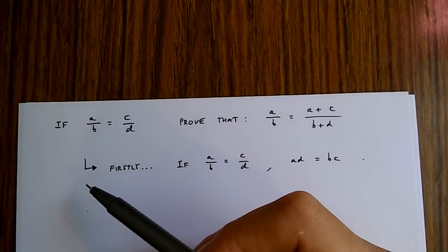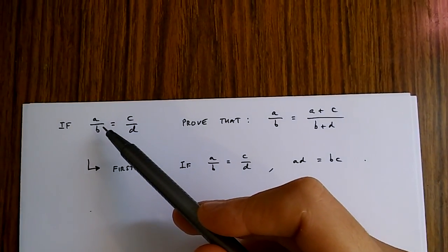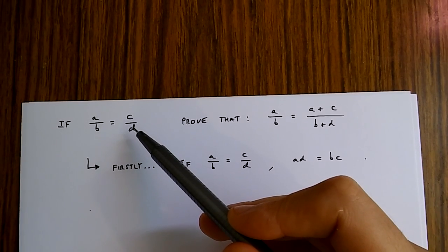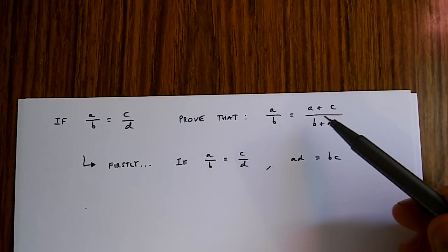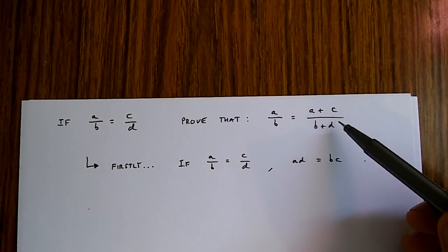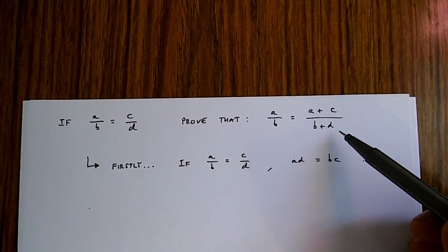Hello. In this video, I'm going to be showing you that if a over b is equal to c over d, then a over b is equal to a plus c over b plus d.